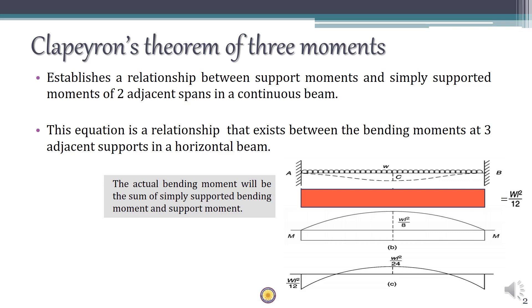For applying this method, the equation is applied over two spans which are adjacent to each other. This brings out the relationship that exists between the three bending moments at the adjacent supports in a horizontal beam. It is also worth noting that the actual bending moment in any beam can be taken as the sum of the simply supported bending moment and the support moment.